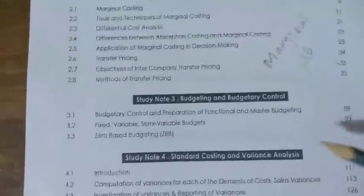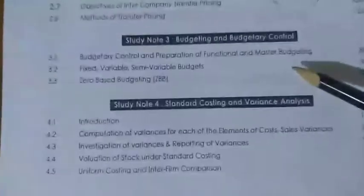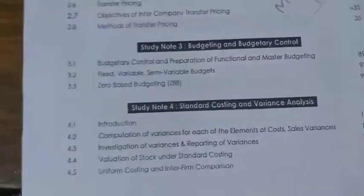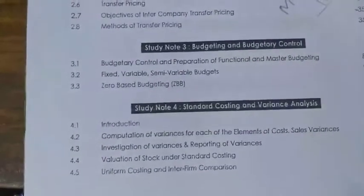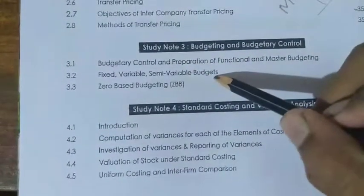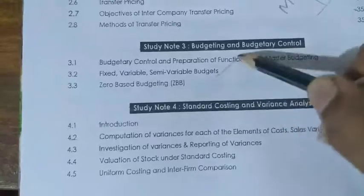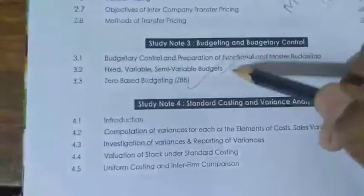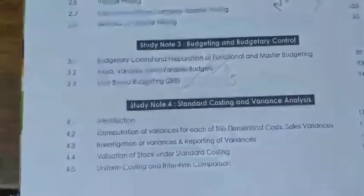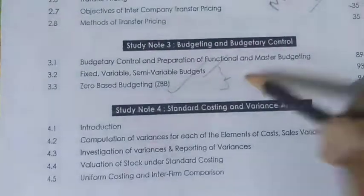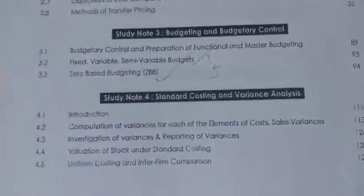The third chapter is Budgeting and Budgetary Control. In this chapter, Fixed, Variable, Semi-Variable Budget and Zero Based Budget are important. This is the first question area we need to complete in the exam.